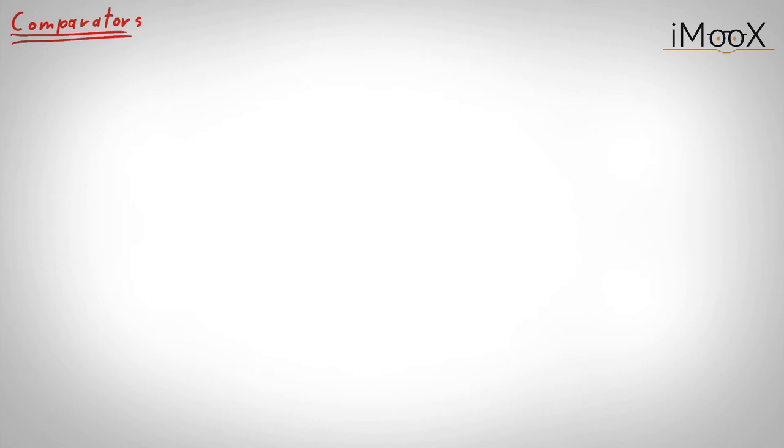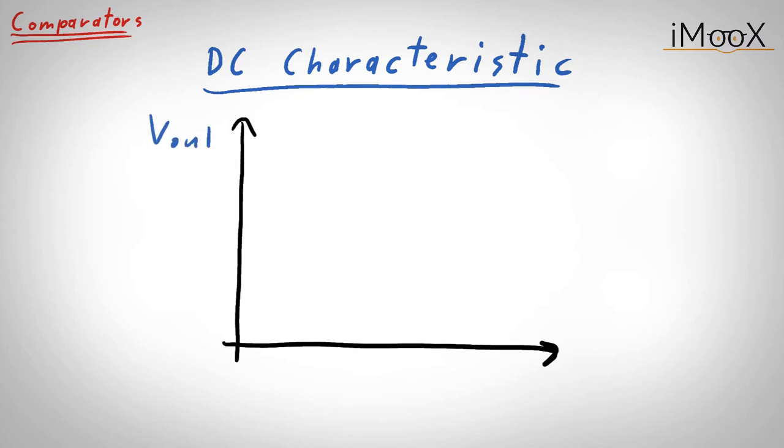Let us have a look at the DC characteristic of such a comparator. We will plot the output voltage with respect to the input voltage. Additionally, we have a reference voltage that acts as a threshold, defining the exact point when the output should switch from low to high. This would give the following characteristic.